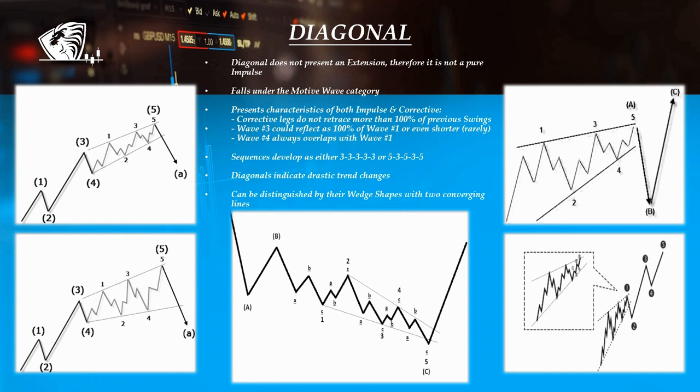It's a hybrid with motive and corrective features. Diagonals take either 3-3-3-3-3 or 5-3-5-3-5 forms in their structures, depending on their locations, and are usually signs of drastic changes in trends. They take a wedge shape within two converging lines and are used by traders as reversal confirmations.